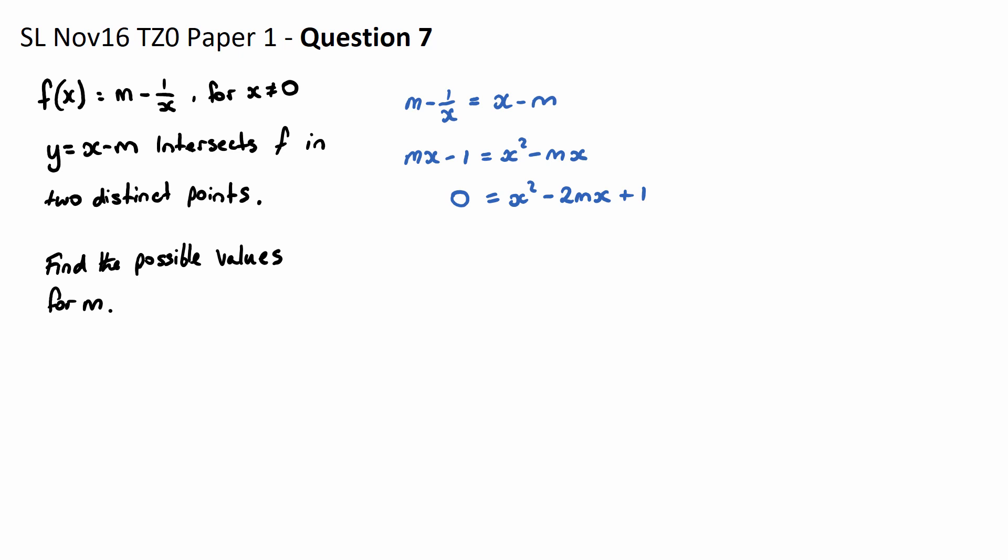We want to solve our quadratic here, and the question says it intersects in two distinct points. That means that the discriminant of our quadratic is greater than 0.